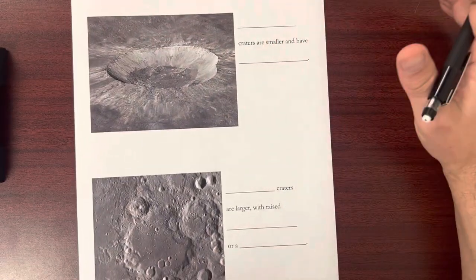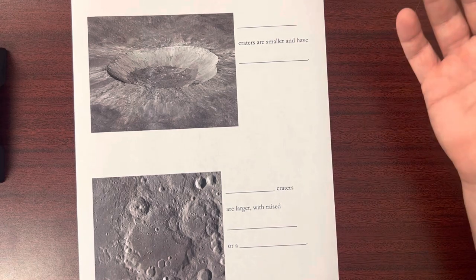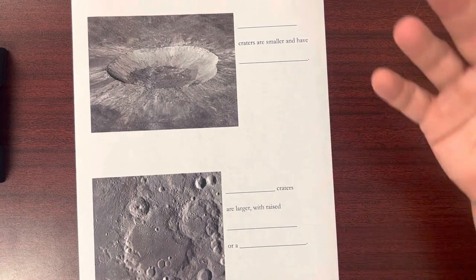So now a couple of the types of craters. Because we see all kinds of craters on the moon. Again, there's no wind. There's no erosion. There's nothing that gets rid of these craters.